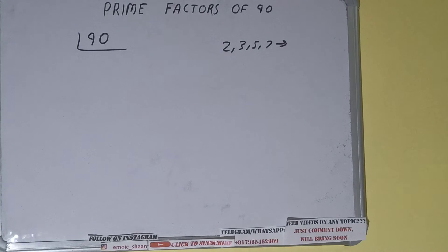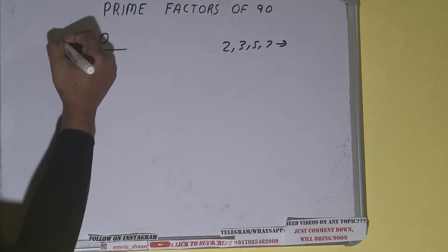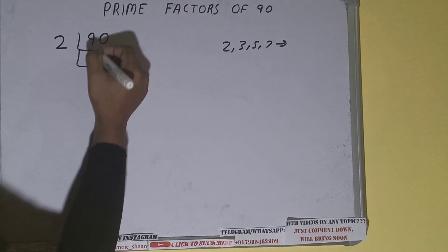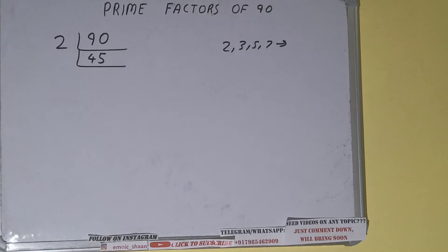That is two. Is the number 90 divided by two? Yes, it is because the number is even, so divide it. And on dividing, we'll be having 45.